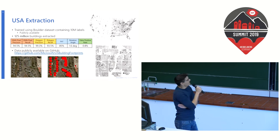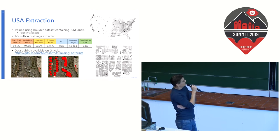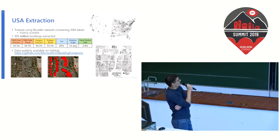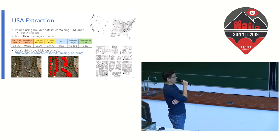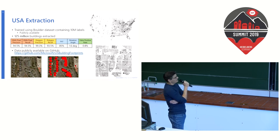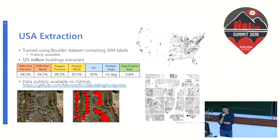A little over a year ago we released our first output: US building extractions. You can see the precision and recall we achieved — precision measures how many false positives we create, and recall is the metric of coverage. These are results you can expect when you have good imagery paired with a high amount of good quality data.